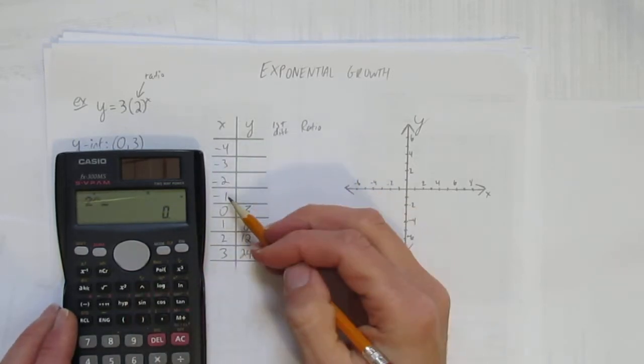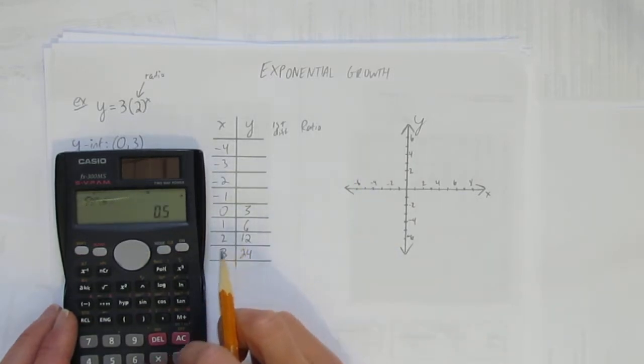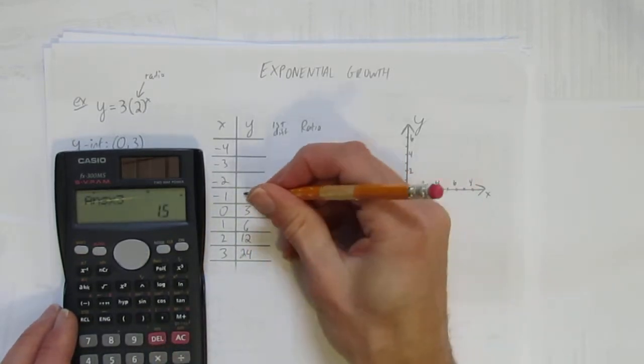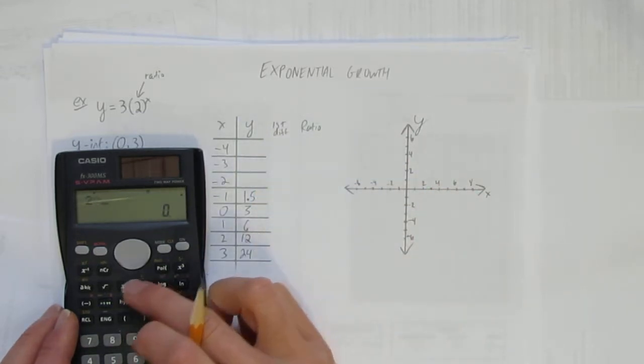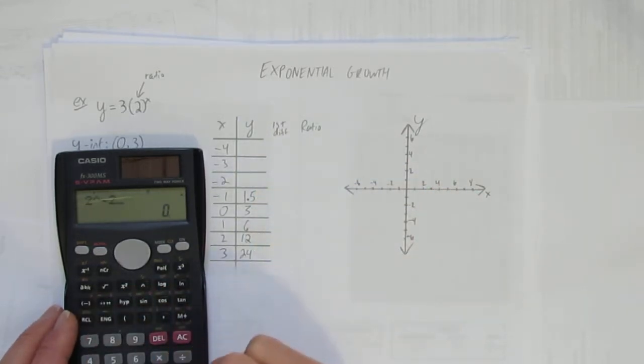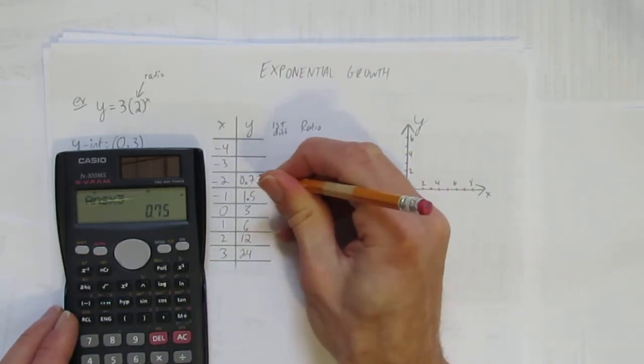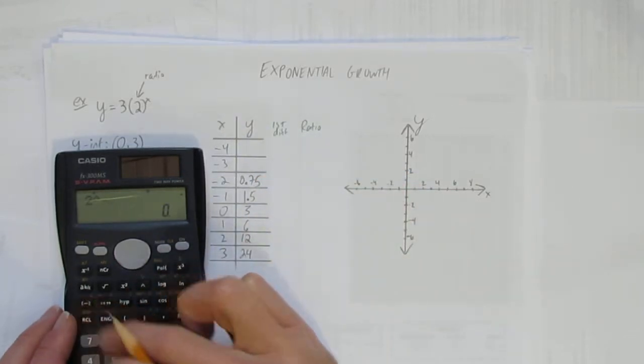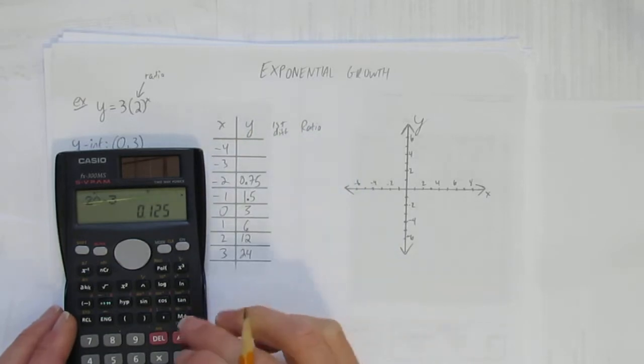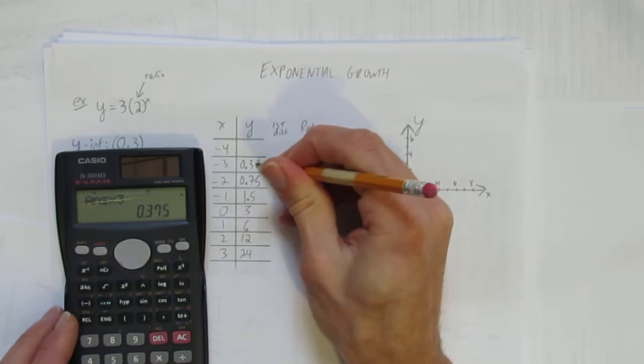Let's see. What's 2 to the power of negative 1? You get 0.5 times 3, and sure enough, 1.5. Let's keep going. What's 2 to the power of negative 2? You get 0.25 times 3, which gives 0.75. What's 2 to the power of negative 3? 0.125 times 3, and you get 0.375.